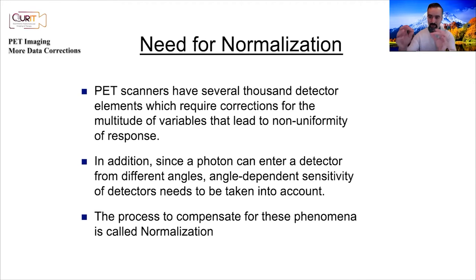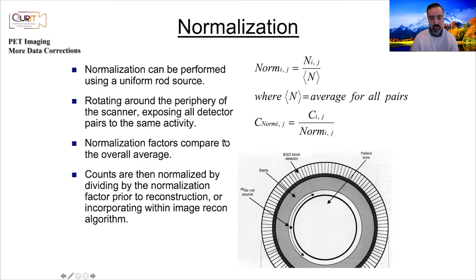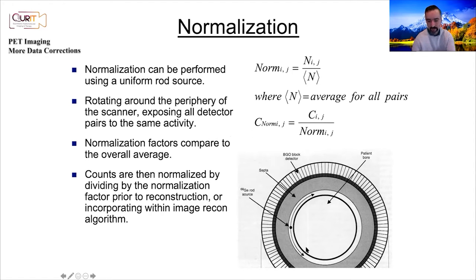The sensitivities of individual crystals vary from day to day, week to week, month to month, and there are also angle-dependent sensitivities. This correction is called normalization, and it is often performed using a uniform rotating rod source that rotates around at the periphery of the field of view, because pretty much all lines of response pass through it.